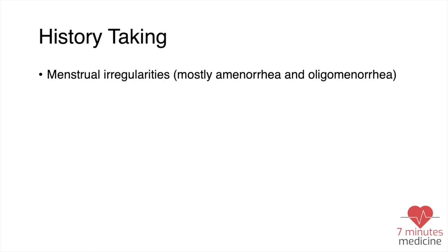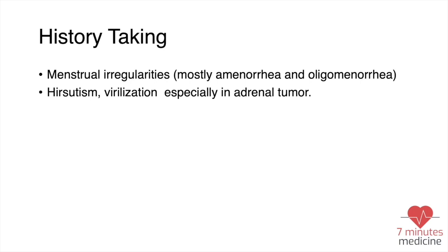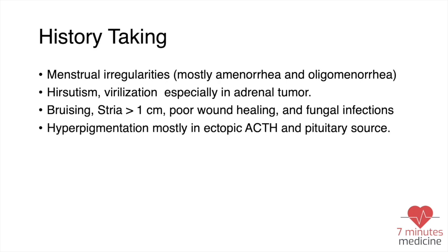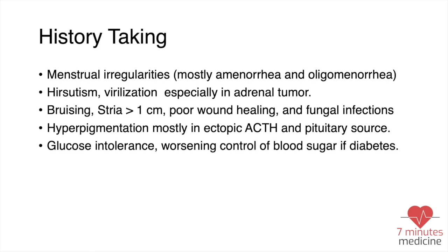Patients may come with a very diverse set of symptoms. They can present with menstrual irregularities, mostly amenorrhea and oligomenorrhea. They can come with hirsutism, virilization — especially in adrenal tumors — bruising, striae especially if more than one centimeter, and a history of poor wound healing and recurrent fungal infections.